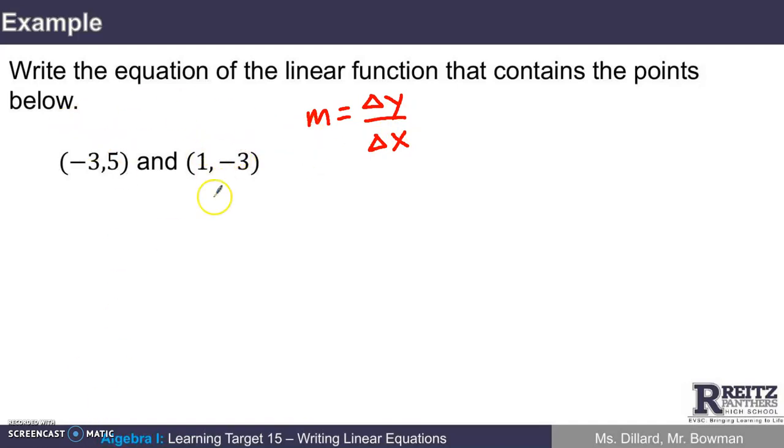The method for finding the slope was to either use a formula, or make a little table out of these two ordered pairs, negative 3 comma 5 and 1 comma negative 3. The change in x, what do I do to go from negative 3 to 1? That would be add 4. What do I do to go from 5 to negative 3? I need to subtract 8.